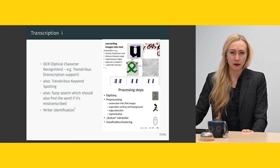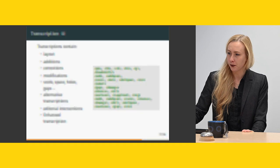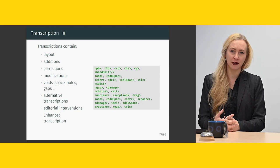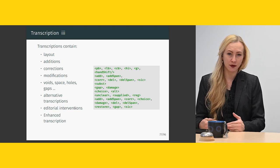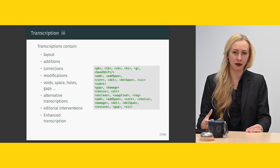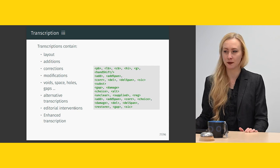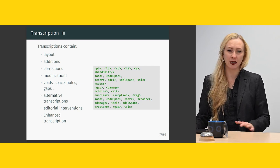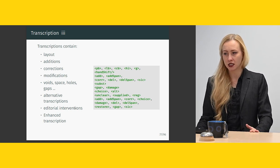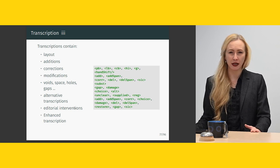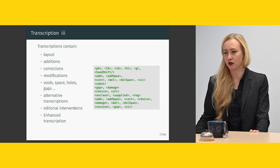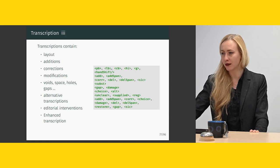We've already talked a little bit about transcription, so I'll skip those slides for now. But transcriptions also have influence on our TEI files. We were talking about how transcriptions are relevant in transcribers, and I said a few words about optical character recognition or handwritten text recognition. But there are also many things I might want to indicate in the TEI, such as layout additions, corrections, modifications, voids, space holds, gaps, alternative transcriptions, editorial interventions, or enhanced transcriptions.